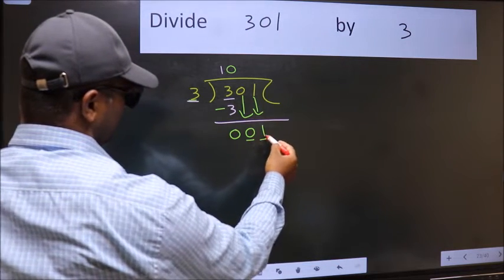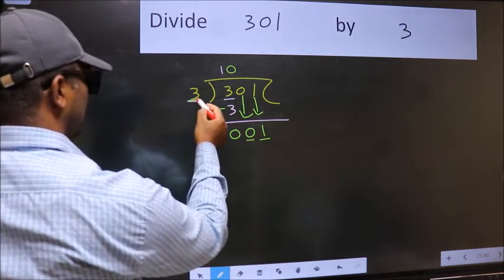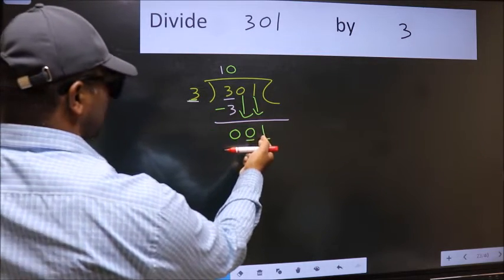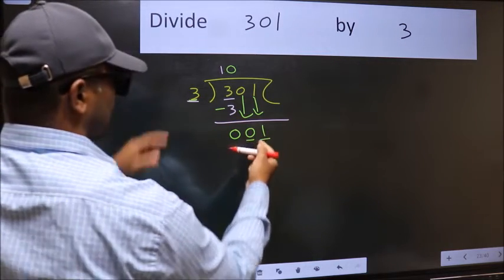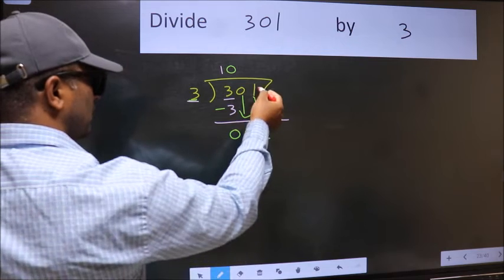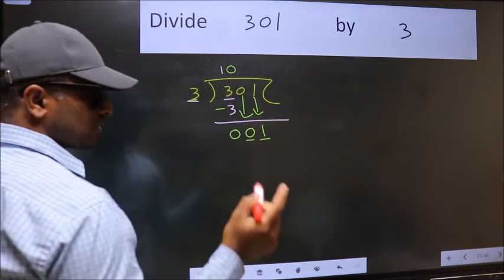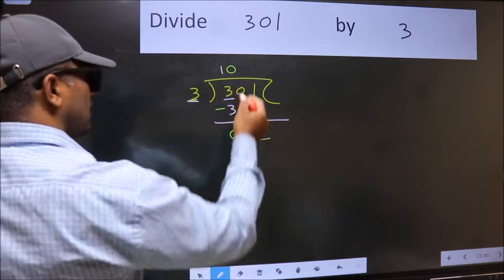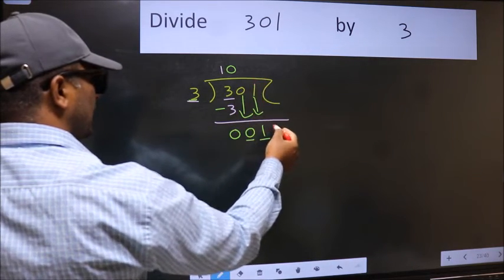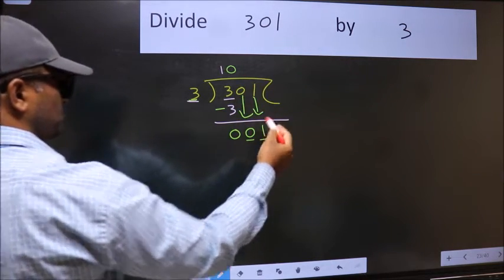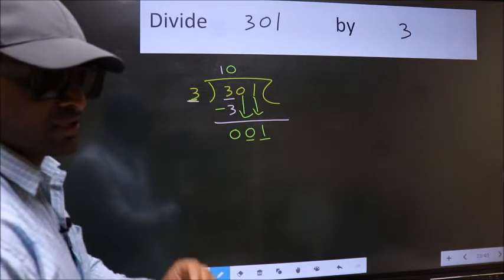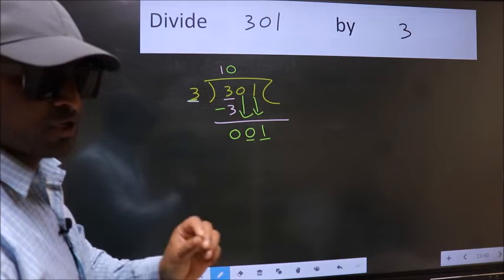And the mistake is this. Here we have 1 and here 3. 1 is smaller than 3. And we don't have any more numbers to bring it down. So, what many do is they directly put dot and take 0. Which is wrong.